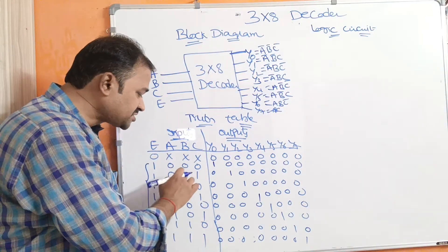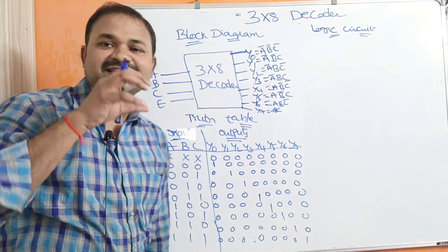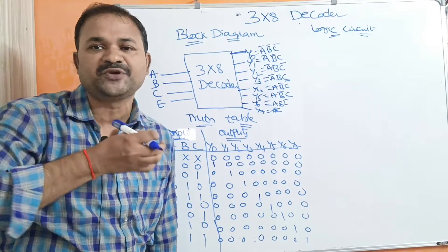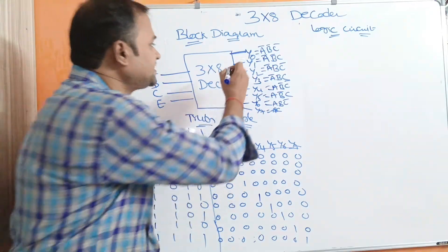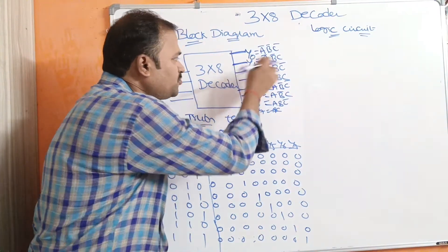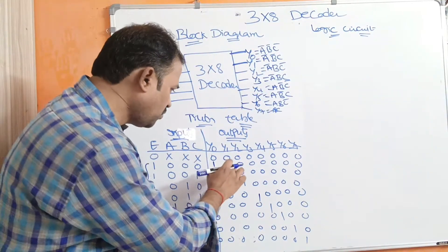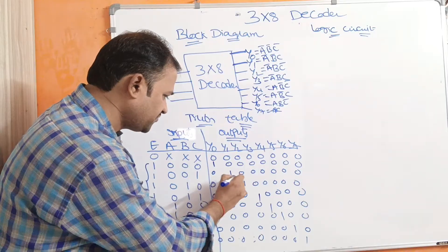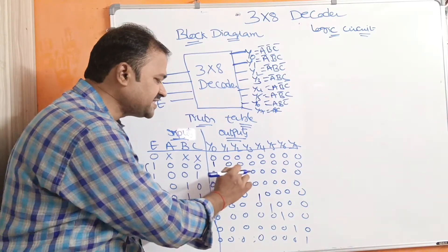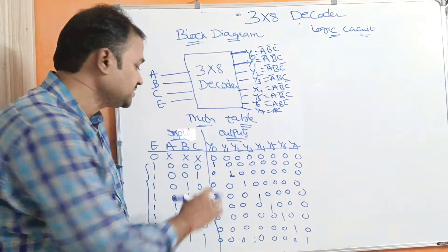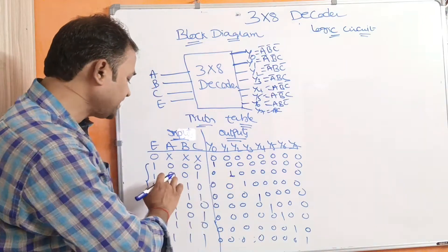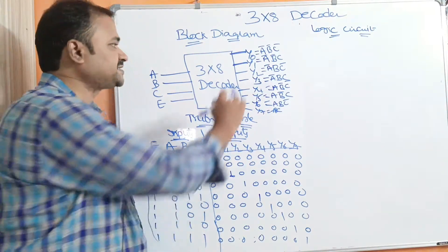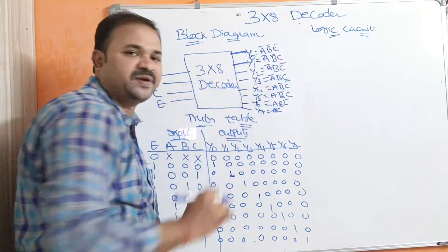Likewise when the inputs are 0, 0, 1 then the second output line will become active. We get output on Y1. Y1 will be active whereas the remaining lines are inactive. So when Y1 is one then the input combination is 0, 0, 1, which means A bar, B bar, C. So Y1 equals A bar B bar C.